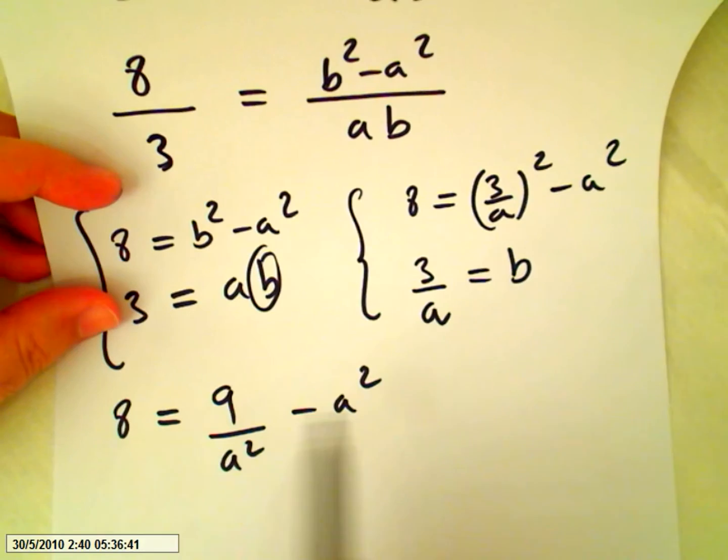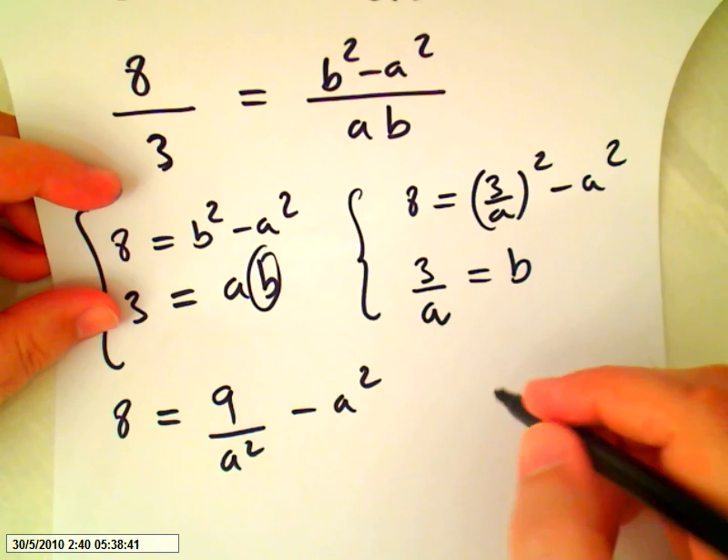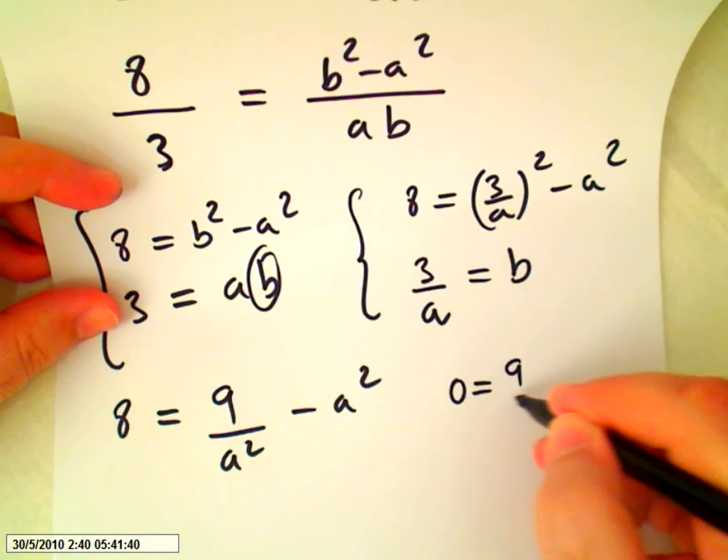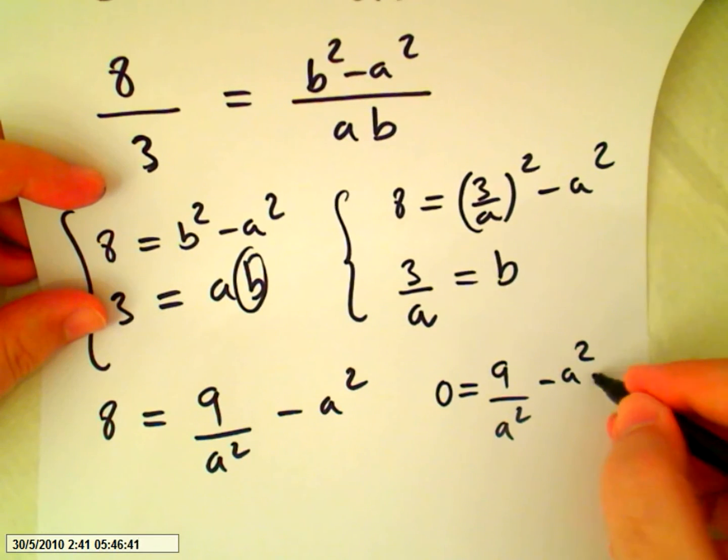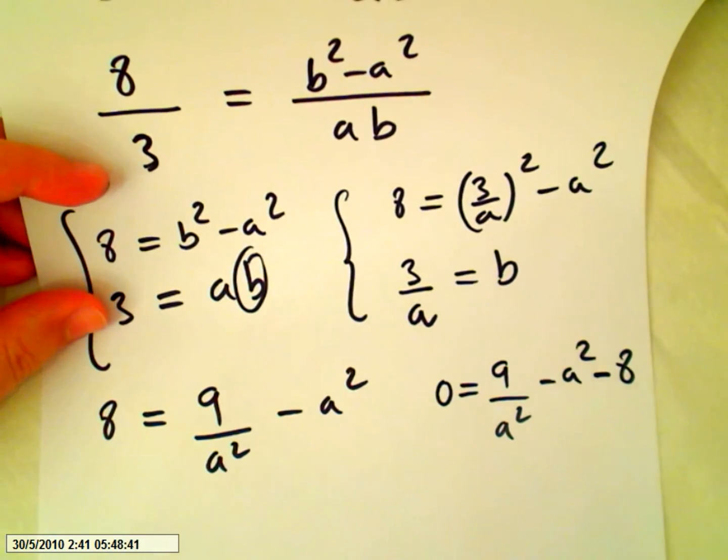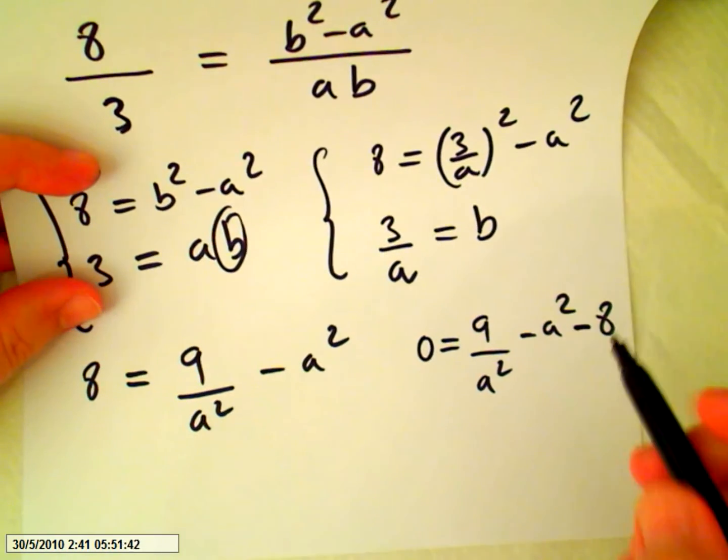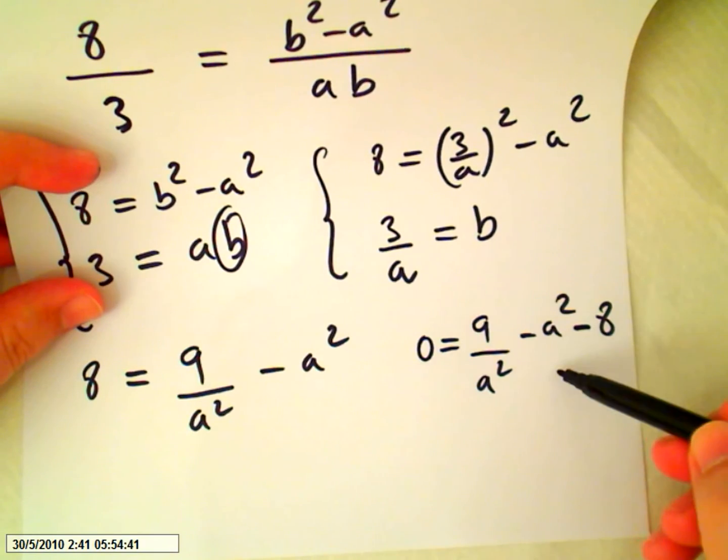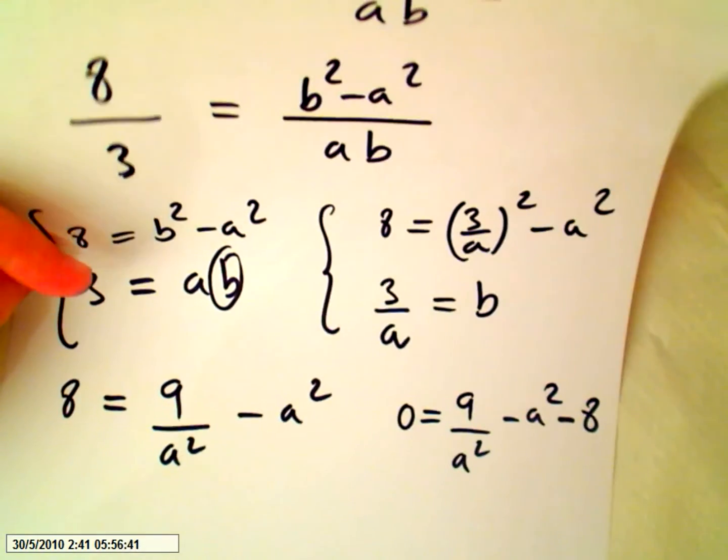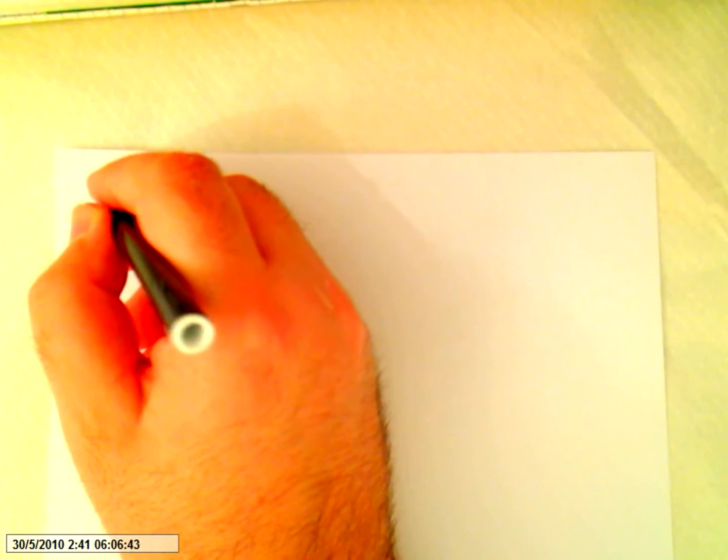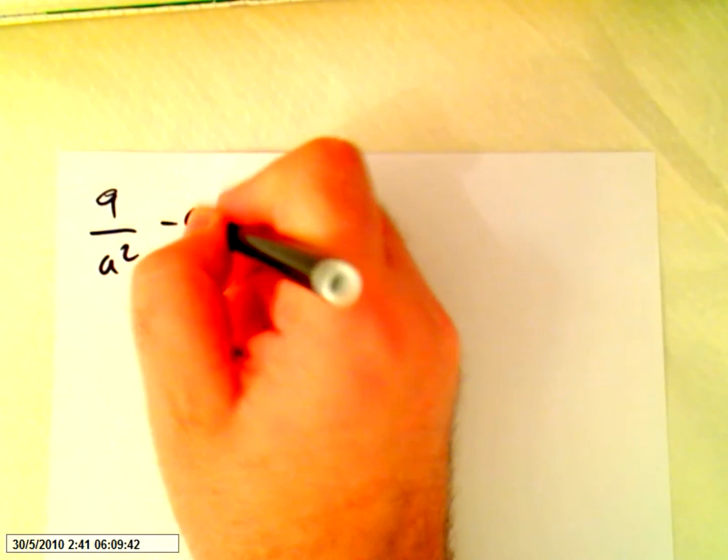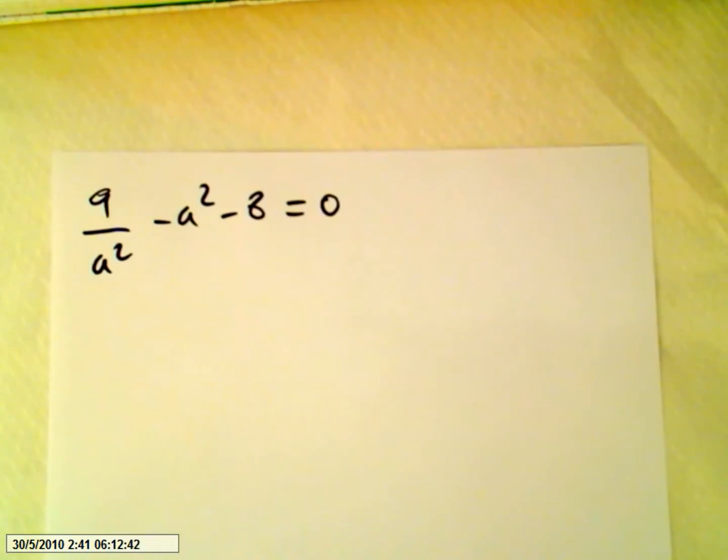And we can have all these numbers on this side. So we can say 0 equals 9 over a squared minus a squared minus 8. Now we should get the common denominator. So we are on 9 over a squared minus a squared minus 8 equals 0.